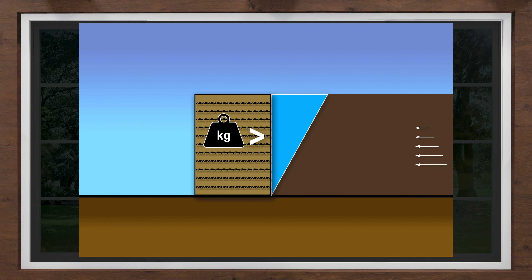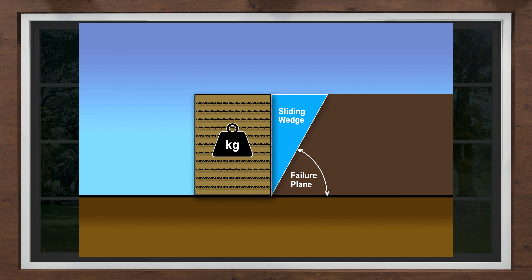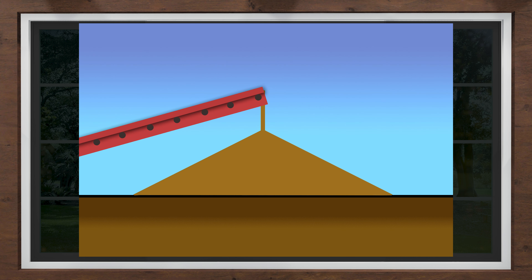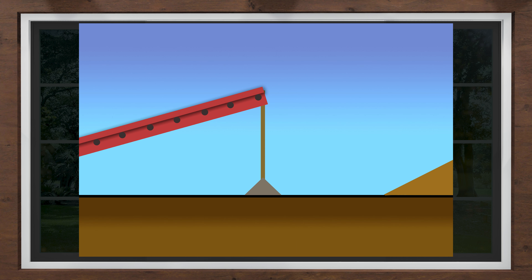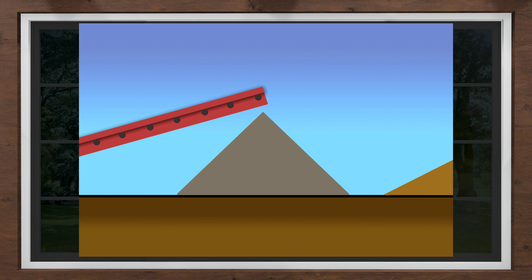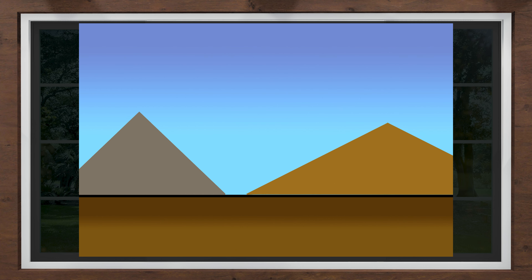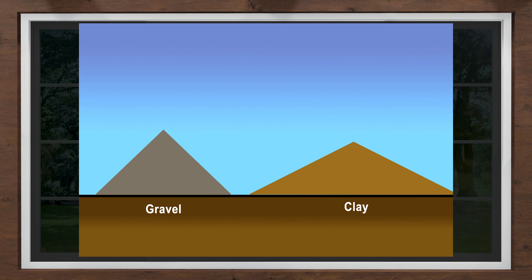The sliding wedge has similar attributes as water pressure behind earth dams. The angle at the bottom of the wedge is determined from the friction angle of the soil, which is often referred to as the shear strength. The friction angle of soil can be observed by piling soil on the ground — when you pile soil on the ground, it naturally forms a conical shape. The steepness of the cone is directly related to the friction angle of the soil.